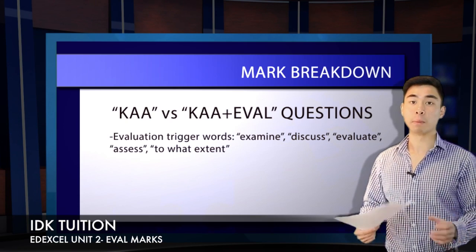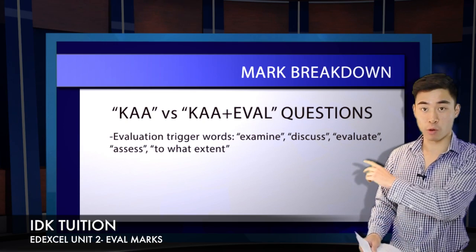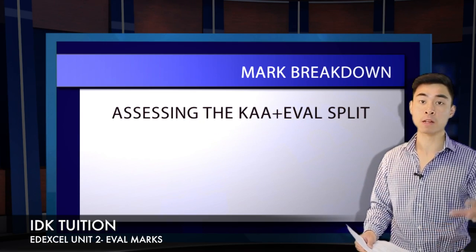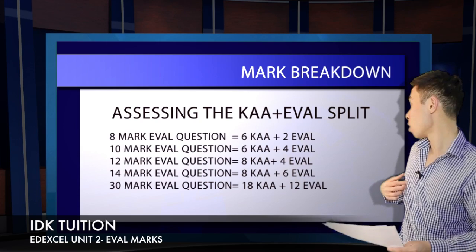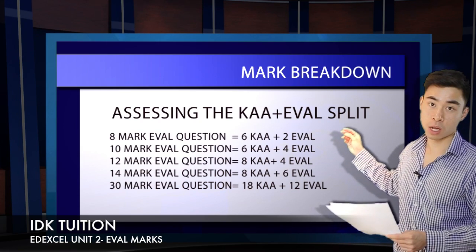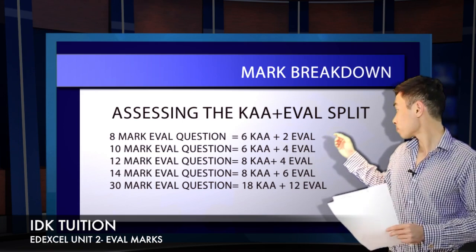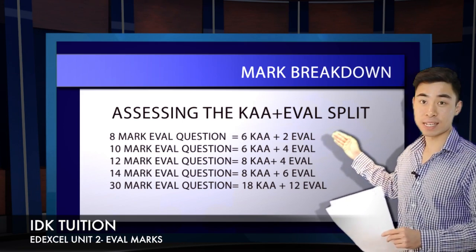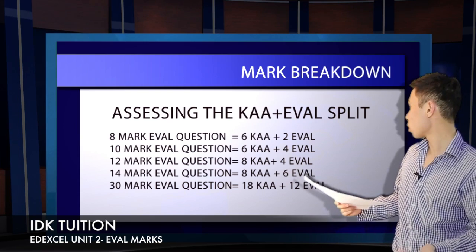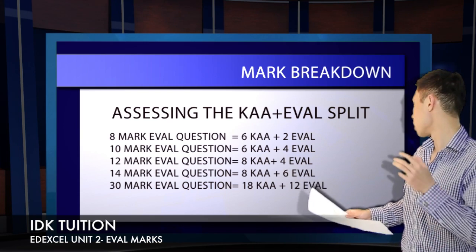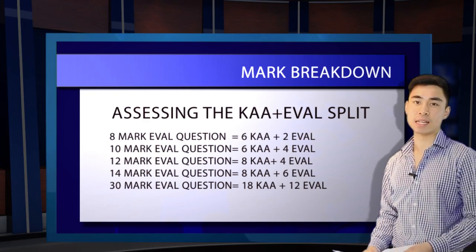The next step in assessing the allocation of marks on offer for any given question, you want to be figuring out how many marks are available for the evaluation component as opposed to the KAA component. Even within an evaluation question, there are still KAA marks on offer. For any evaluation question, the KAA allocation is always going to be less than 50%. For an eight-mark evaluation question, you get six KAA marks and two evaluation marks. For a ten-marker, there's a six-four split, and for a fourteen-marker, there's an eight-six split.